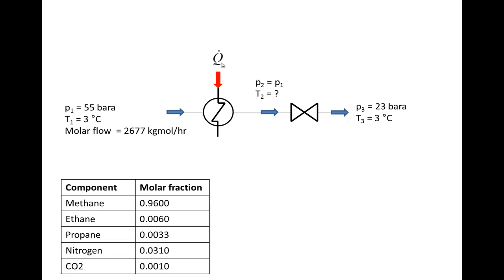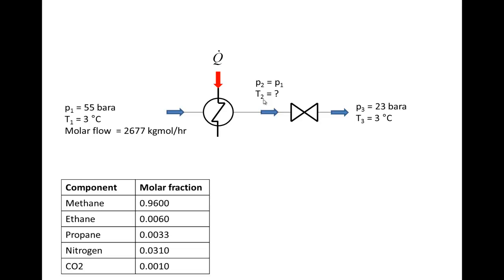After that, it is possible to calculate the heat flow that the heat exchanger has to provide to raise the temperature from 3 degrees to the temperature upstream the valve. Before doing it with HYSYS and DWSim, we are going to use a thermodynamic diagram called the Mollier diagram. In this diagram we have pressure on the y-axis and enthalpy on the x-axis, and this diagram was made for methane. In our case we have a mixture of other components but the molar fractions are low, so it might be a good approximation.